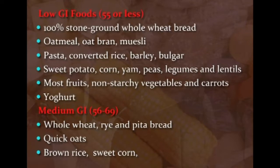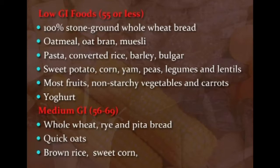Low GI foods (55 or less) include oat bran, muesli, pasta, sweet potato, corn, peas, most fruits, and yogurt. Medium GI foods (56–69) include oats, brown rice, sweet corn, rye, and pita bread. High GI foods (70 or more) include white bread, corn flakes, puffed rice, rice pasta, macaroni, pumpkin, potatoes, melons, and pineapples.